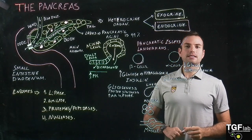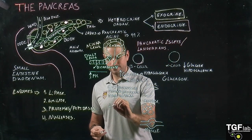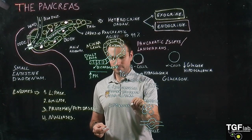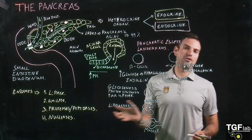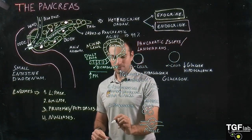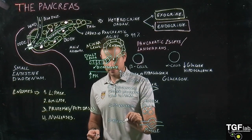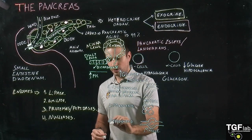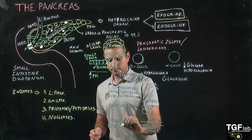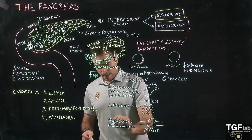In the adipose tissue, what insulin is going to promote is lipogenesis — the formation of fat — in order to remove and store this sugar into fat. And then finally, in the muscle, insulin is also going to promote glycogenesis and protein synthesis, as well as glucose uptake.